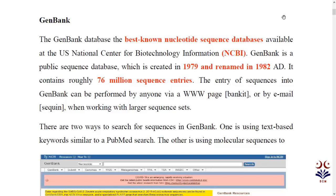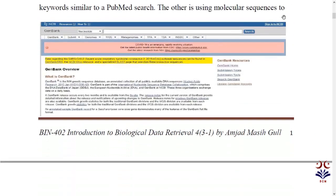The first primary database is GenBank. GenBank is the best-known nucleotide sequence database, created in the United States. It was introduced in 1979 and officially named and created in 1982. It contains nucleotide sequences — there are 76 million sequence entries, showing how large this nucleotide database is.